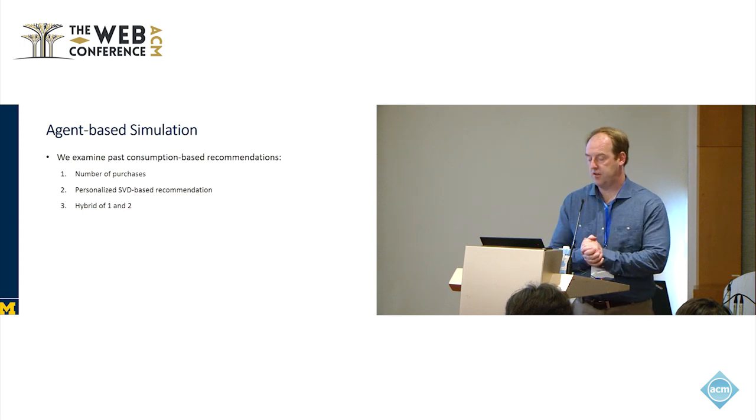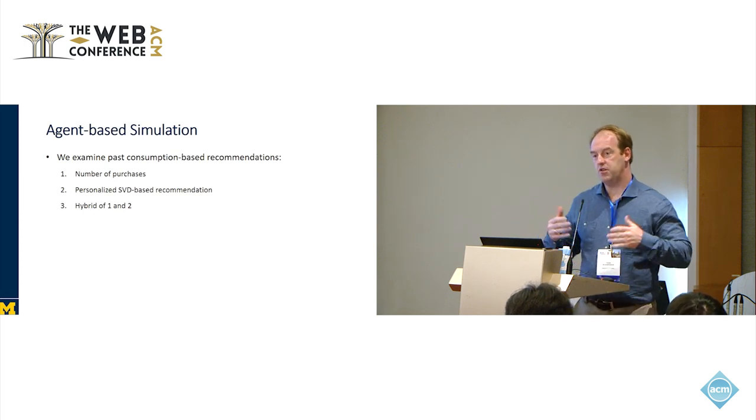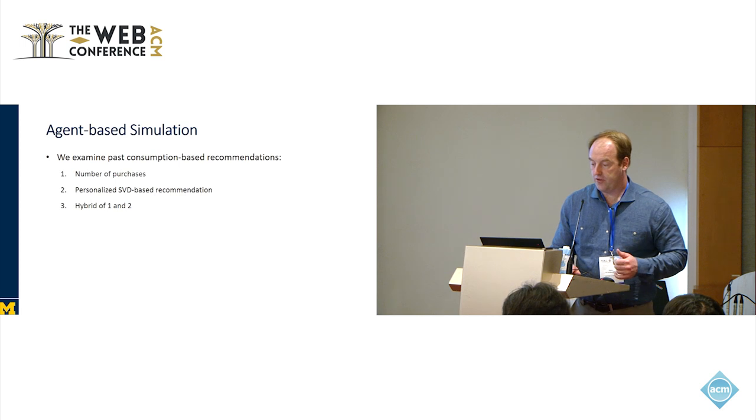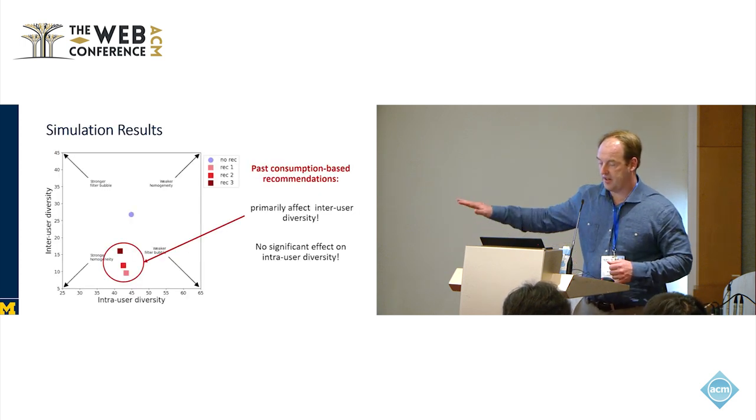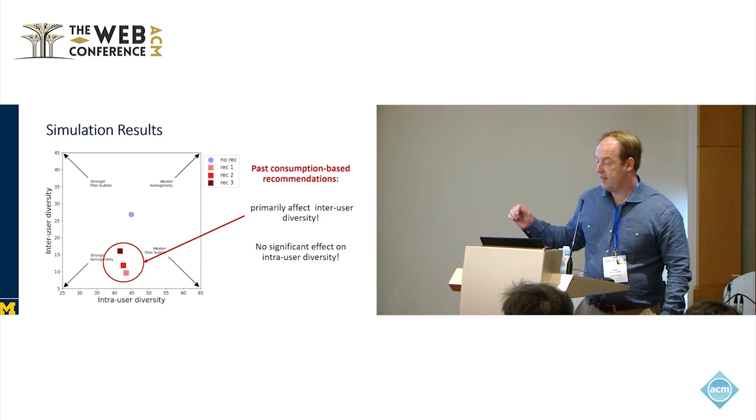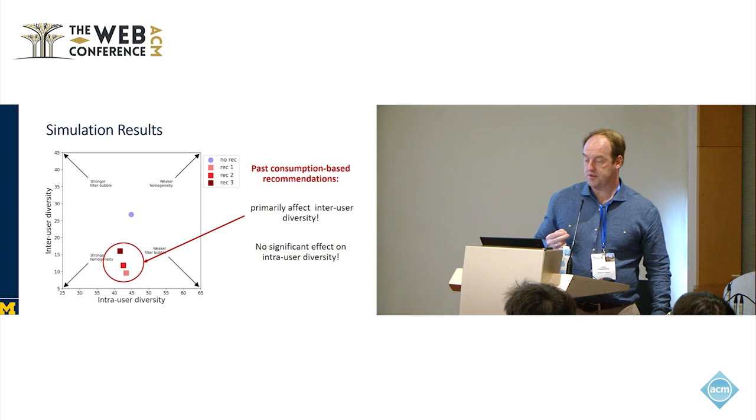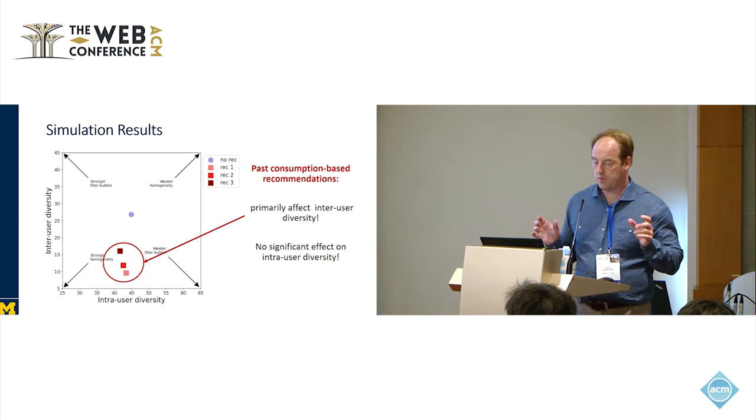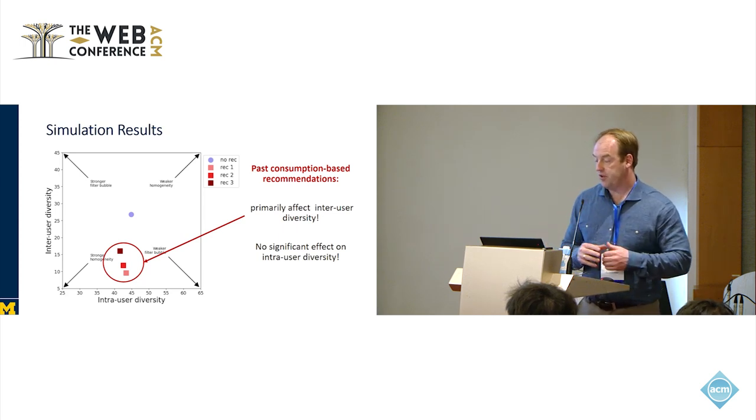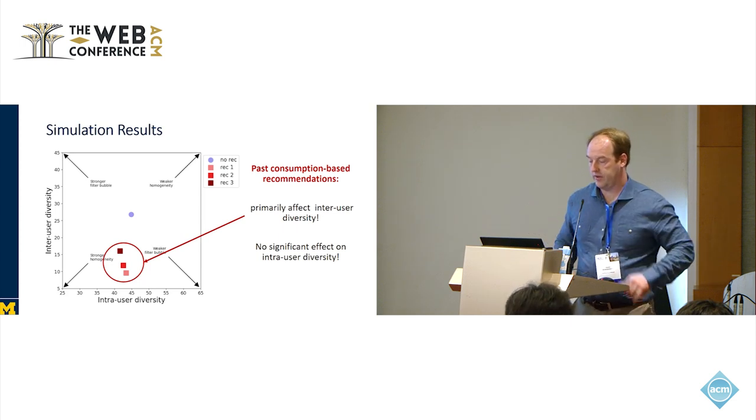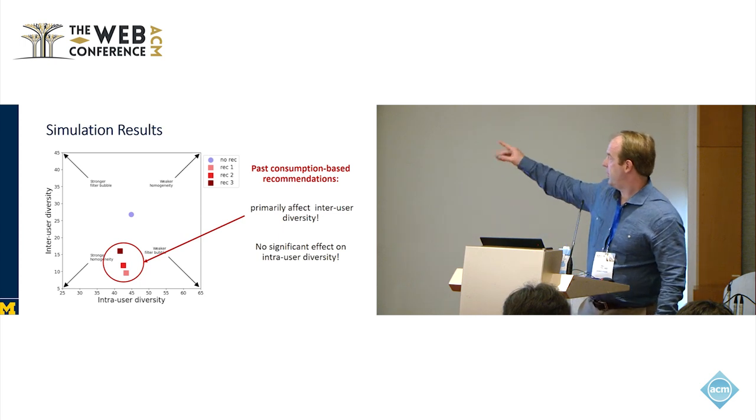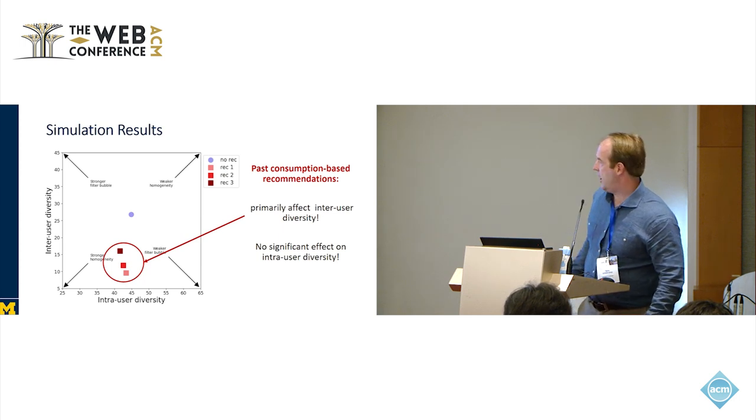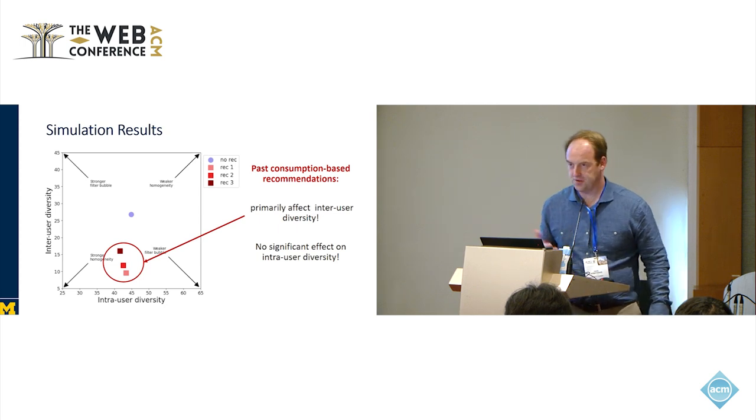We're going to examine traditional recommendation systems, based on telling the user the number of times an item has been purchased or some SVD-based recommendation system, or a hybrid of the two. We'll see what happens, mapping these on our axes: inter user diversity and intra user diversity. Compared to the blue dot in the middle, which is no recommendation, when we provide users with recommendations, the intra user diversity remains the same. The diversity of content that any one person is consuming is the same. But the inter user diversity decreases. They're moving towards the center. In terms of filter bubbles, this is creating a weaker filter bubble, and also homogenizing.